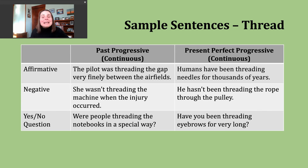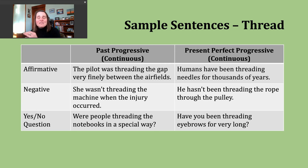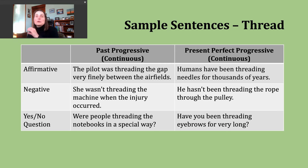To make a negative present perfect progressive sentence, pay attention to your subject. If the subject is I, you, we, or they, use have not or haven't, been, and the ing form. If the subject is he, she, or it, use has not or hasn't, been, and the ing form. Example: he hasn't been threading the rope through the pulley — similar to the earlier example about film and a camera, we're talking about directing a rope through a pulley mechanism through a small opening or space.